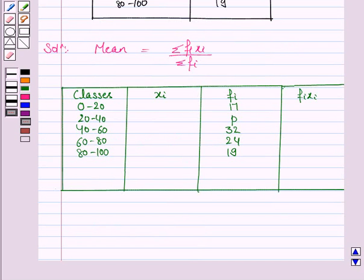This is the frequency distribution table. Now we have to find summation FI and summation FI XI. So we first need to find XI. XI is the midpoint of the class interval.